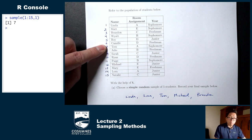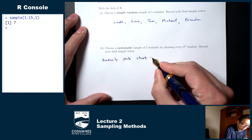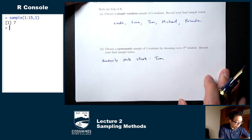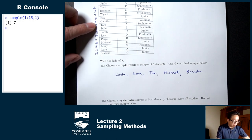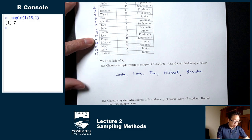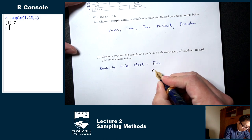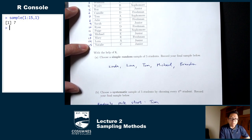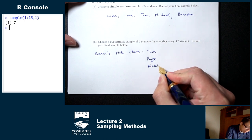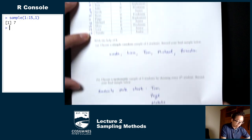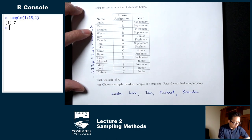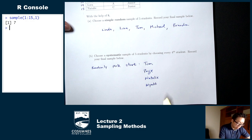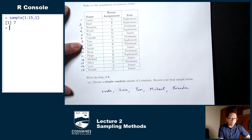Starting with Tom, and it says I want to choose every fourth student, with five students total. Starting with Tom — count by four: one, two, three, four — Paige is next. Count by four again: one, two, three, four — Natalie is next. Once you get to the end of the list, you go back to the top. From Natalie, count by four: one, two, three, four — Wyatt is next. I need one more student: count by four again — one, two, three, four — and that's Julie.